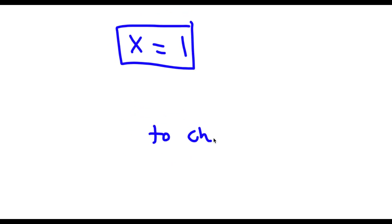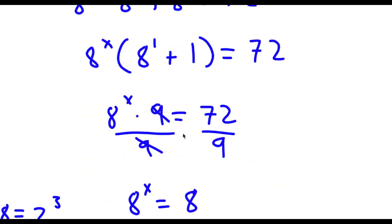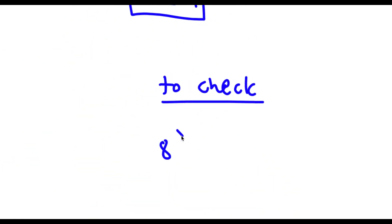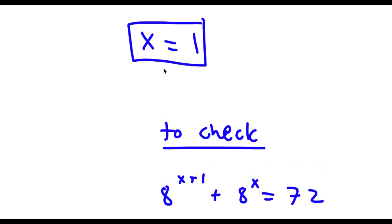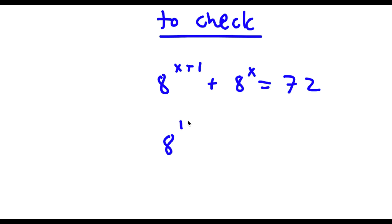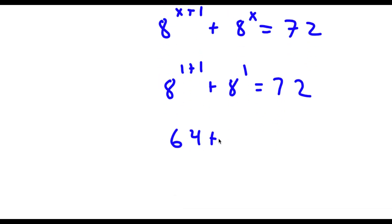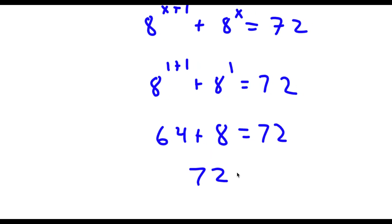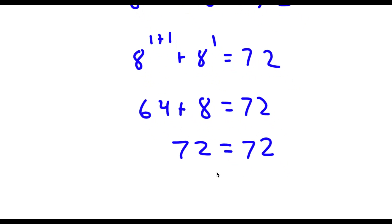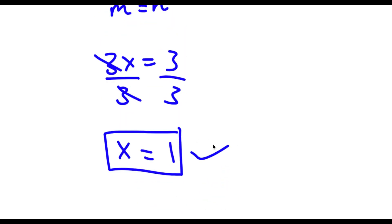So now to check: I have 8 to the power of x plus 1 plus 8 to the power of x is equal to 72, and x equals 1. So 8 to the power of 1 plus 1 plus 8 to the power of 1 equals 72. 8 to the power of 2 is 64, plus 8 to the power of 1 is 8, equals 72. 64 plus 8 is 72, so 72 equals 72 — my solution is correct.